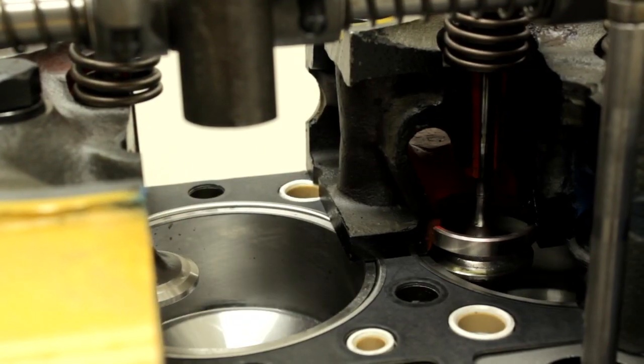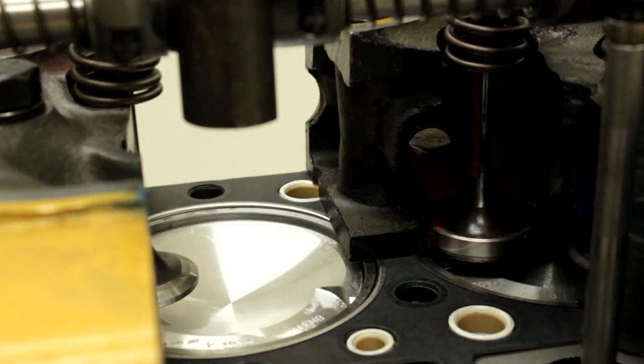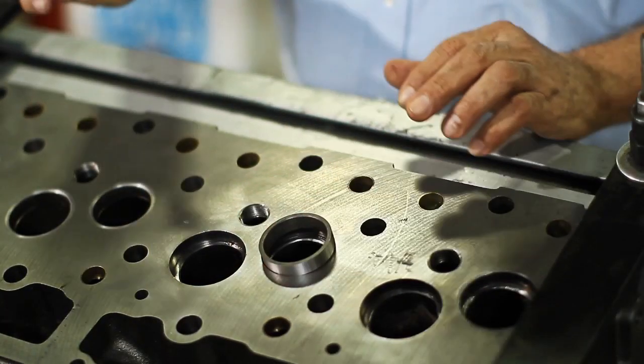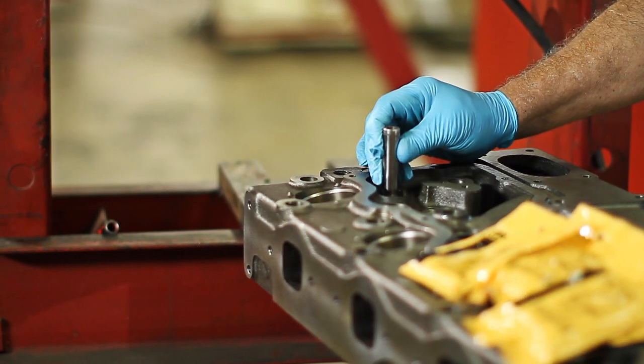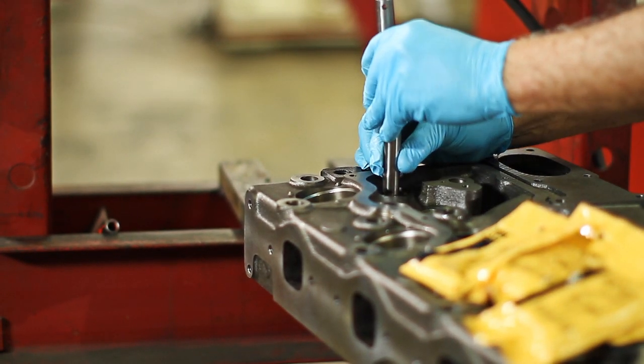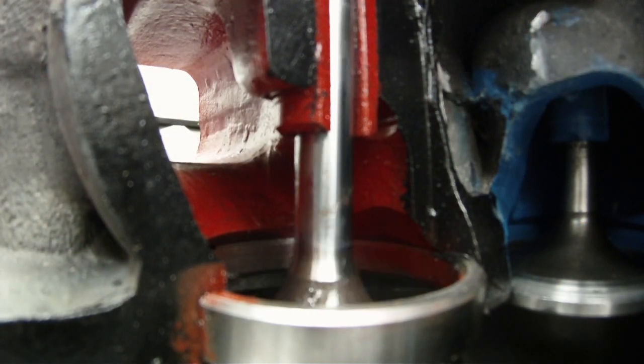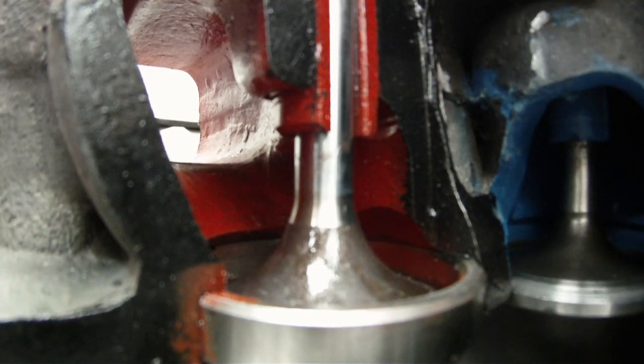When the valves are closed, they must form a tight seal to contain the high pressure of compression and combustion. Valve seats are inserted into the cylinder head for this purpose. Valve guides are the centering device to keep the valve from tilting and the valve face aligned with the seat as they move up and down inside the cylinder head.